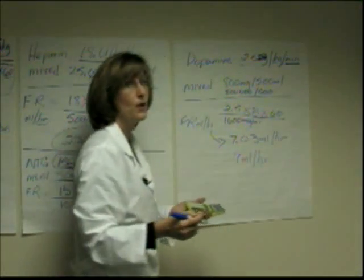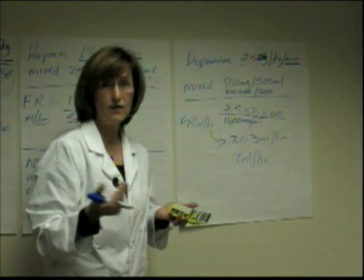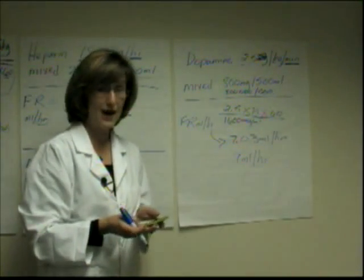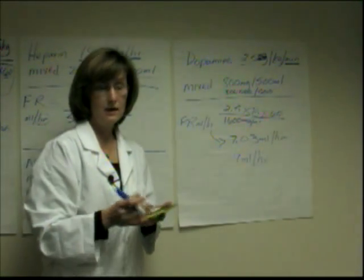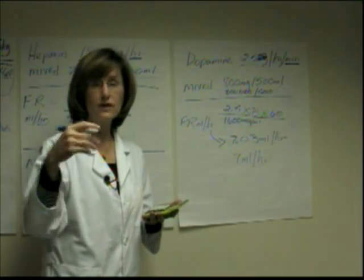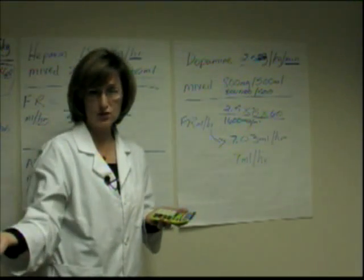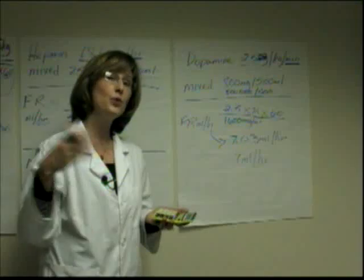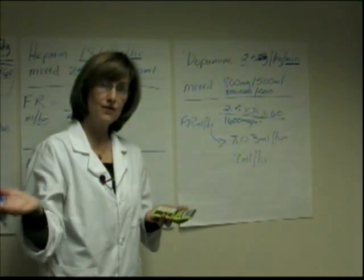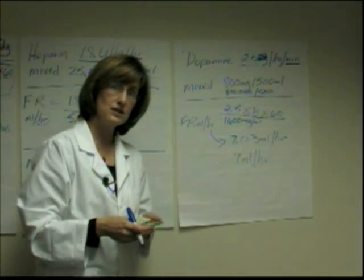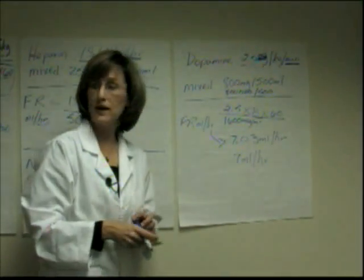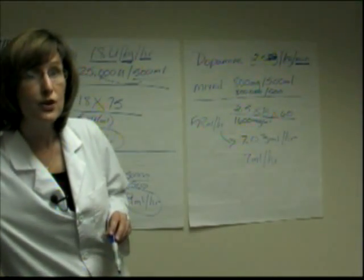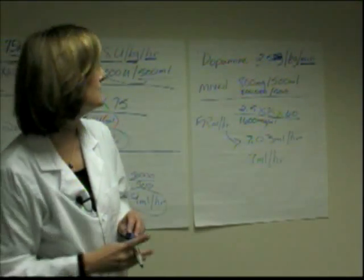Another word to the wise on rounding: IV pumps can go to one decimal point, so make sure you understand the rules. If it's 7.54, the 4 just gets dropped and the answer is 7.5. If it were 7.56, the 5 gets rounded up to a 6, so you'd set your pump at 7.6. If you're going to round, make sure you round correctly.